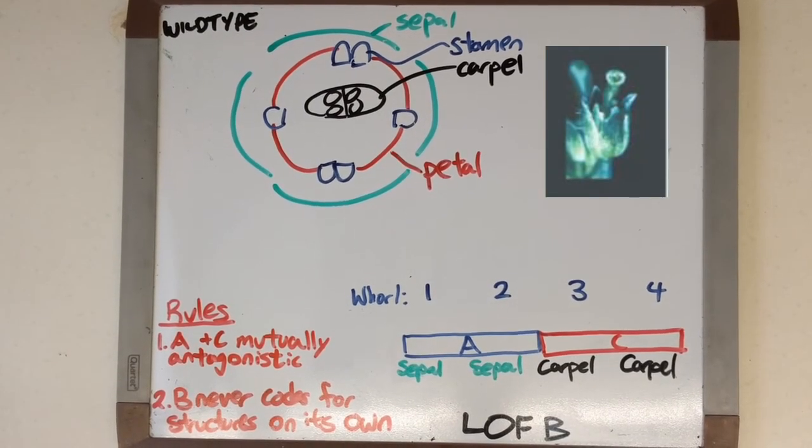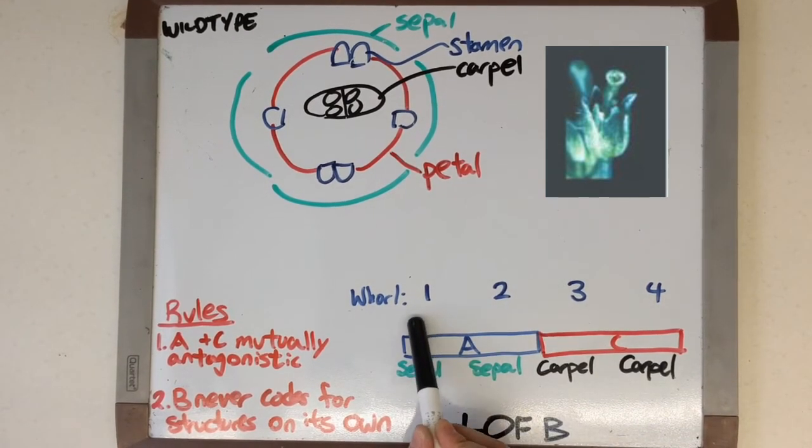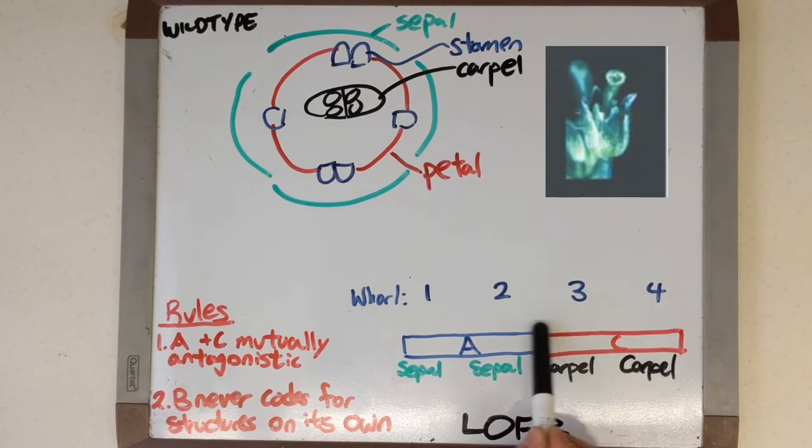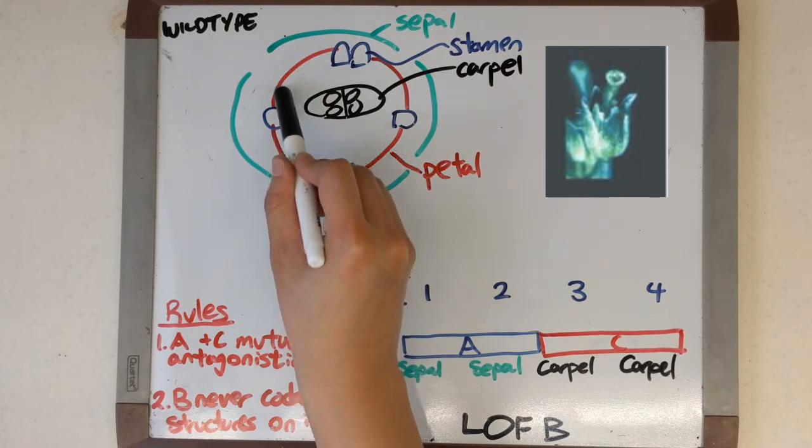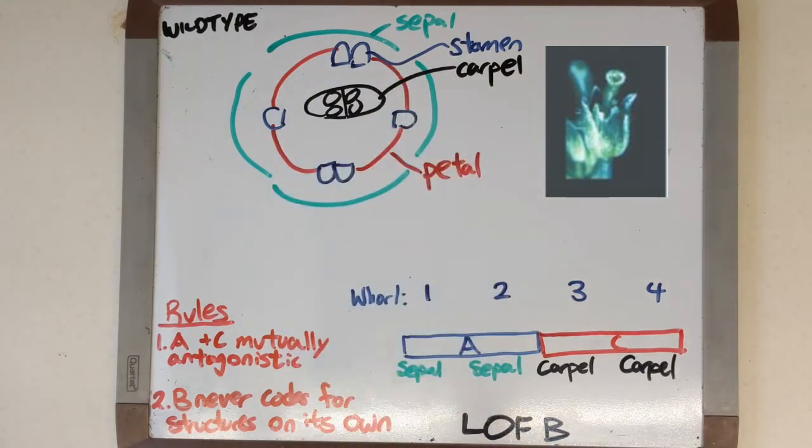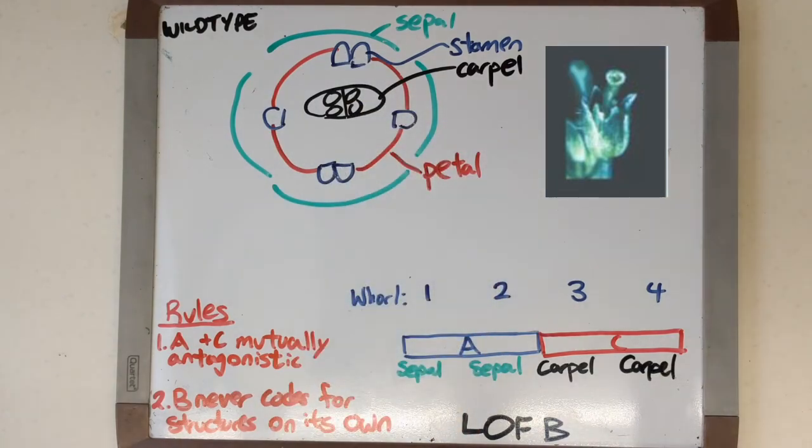So our last mutation is a loss of function of gene class B. Now this means that whorls 2 and 3, which normally would be coded for by a combination, are only coded for by A or C on their own. This means that whorl 2, which is normally petals, will become sepals, and whorl 3, which is normally stamen, will become carpal.